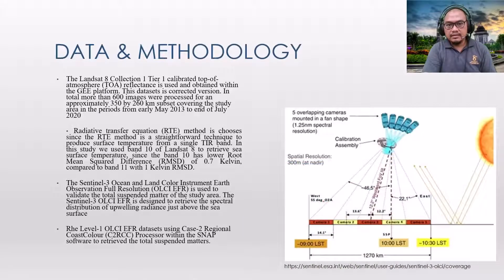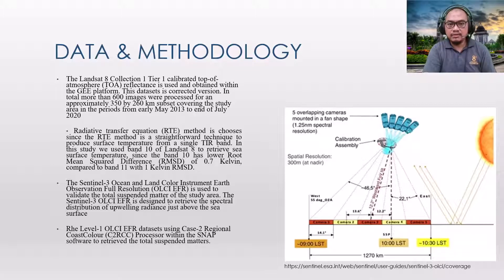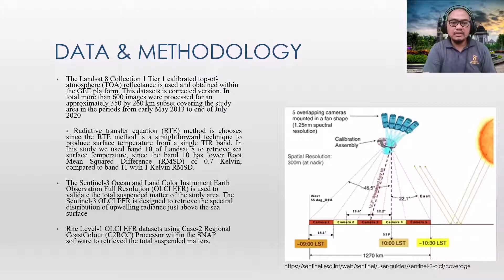For data and methodology, the Landsat 8 Collection 1 Tier 1 calibrated top-of-atmosphere (TOA) reflectance was used and obtained within the GEE platform. This data is available in the GEE data catalog and is a corrected version. In total, more than 600 images were processed for an approximately 350 by 260 kilometer subset covering the study area in the period from early May 2016 to end of July 2020.